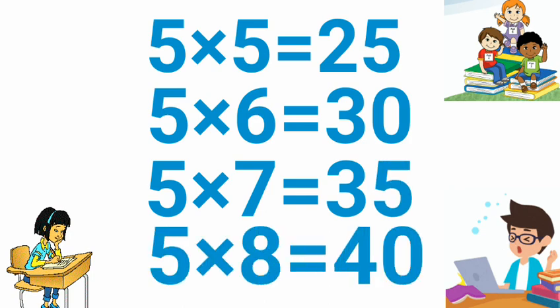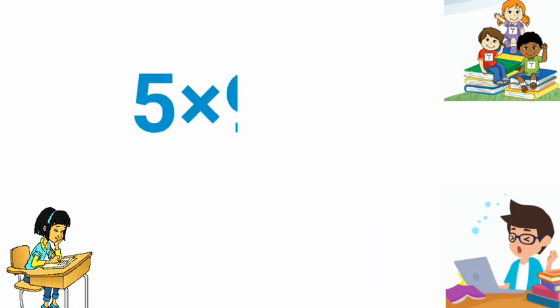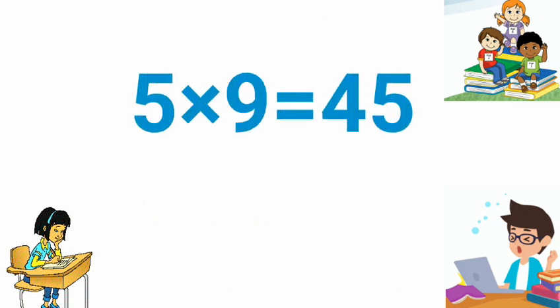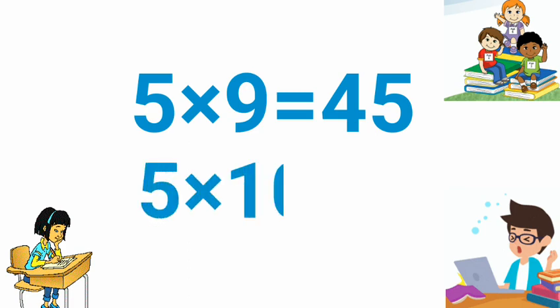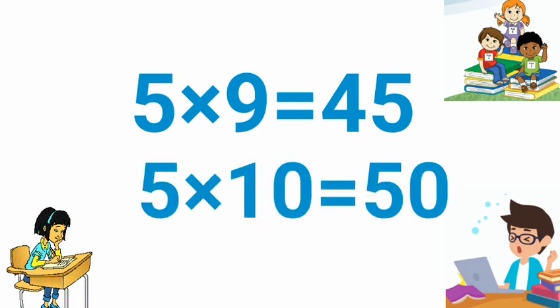5 5 is 25, 5 6 is 30, 5 7 is 35, 5 8 is 40, 5 9 is 45, 5 10 is 50.